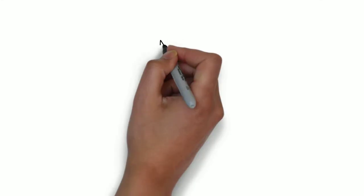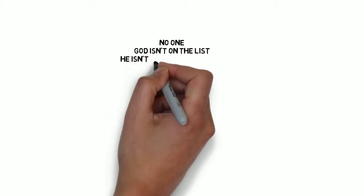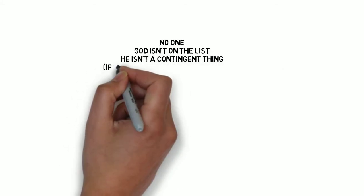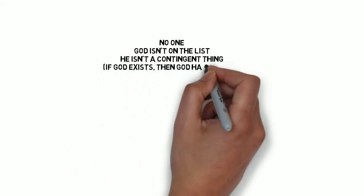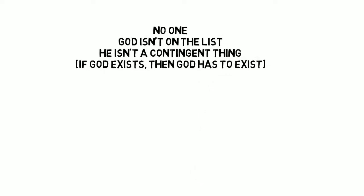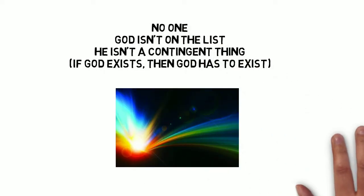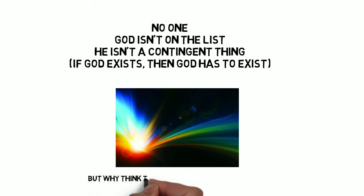Well, then some people ask the question, well, who created God? How come God's so special? Now, the answer to that is, well, no one created God. God isn't on the list of contingent things because he isn't contingent. He's what we call a necessary being. But then some people are saying, well, that's cheating. You know, why should we say that God doesn't need a maker? What's so special about God?